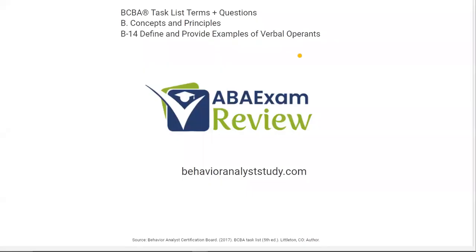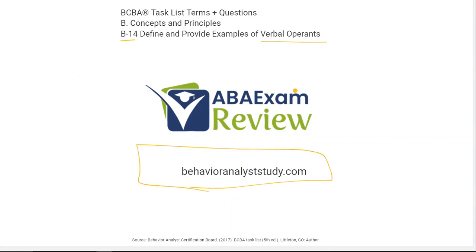Welcome back to ABA exam review in our BCBA task list series, continuing with concepts and principles. B14: provide examples of verbal operants. Verbal operants can be as complex as you want to make them — Skinner wrote entire books on verbal operants, and it's one of the defining features of his radical behaviorism theory. For the exam and in practice, you want to simplify it as much as possible, and that's what we're going to try to do today. Check out BehaviorAnalystStudy.com for all of our study materials, including our combo pack. When you pass, let us know so we can include you in the Sunday shout out. Work hard, study hard. Let's get going.